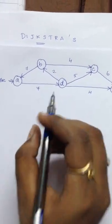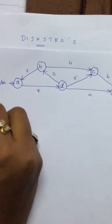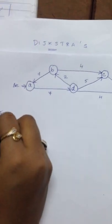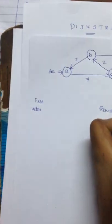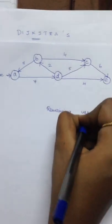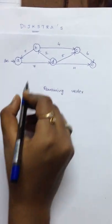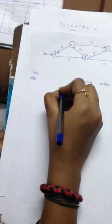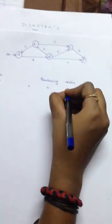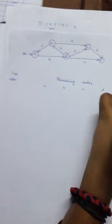To solve this in Dijkstra's algorithm, we construct a table. The first column contains free vertex. The second column, remaining vertex. Under remaining vertex, it is subdivided into the number of nodes. Here we have five nodes, so we name them as A, B, C, D and E.